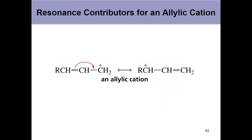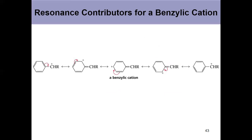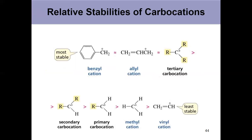The allylic cation has two resonance contributors of equal stability, making it a pretty stable carbocation. For the benzylic cation, starting with the positive charge in the benzylic position, you can move pi bonds and bring that positive charge all around the ring. The last contributor is different from the first because the pi bonds are in different places. So there are five total resonance contributors to a benzylic cation, and that delocalization makes these cations more stable than other carbocations.